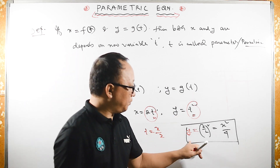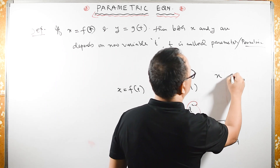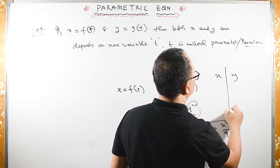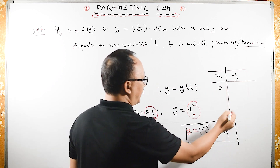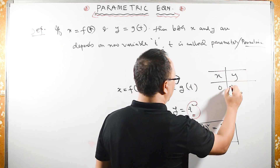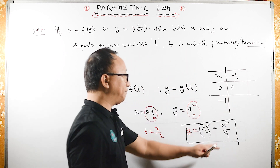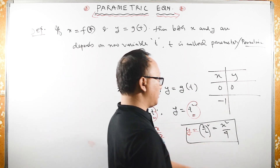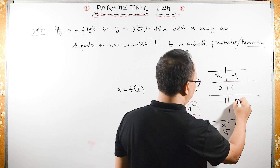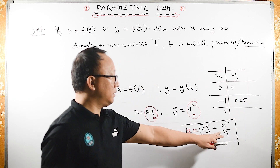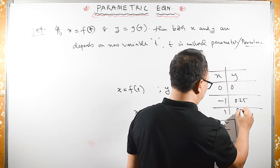To plot this graph, let us take some points — let us take x and y values. When x equals 0, y also becomes 0. When x equals minus 1, it becomes minus 1 squared over 4, which is 1 over 4, that is 0.25. When x equals 1, y is also 0.25, because 1 squared over 4 is the same.